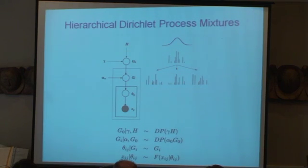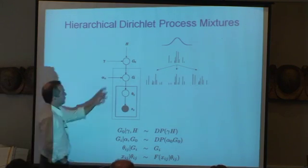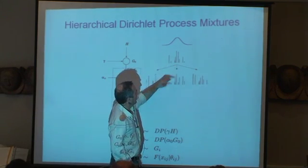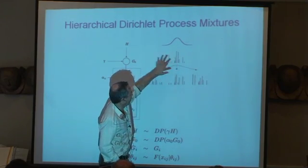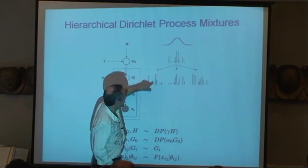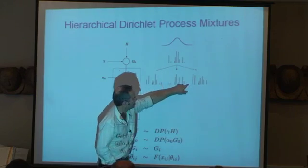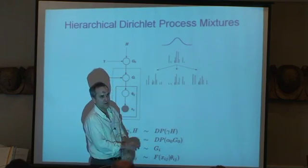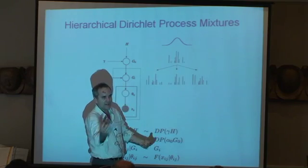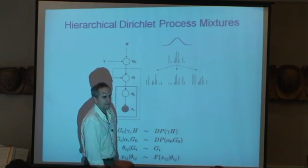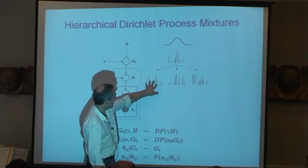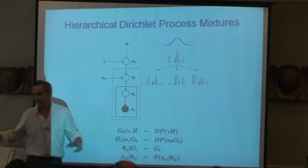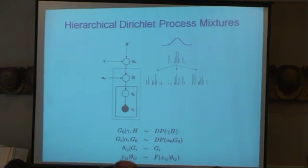We solve that with an architecture called the hierarchical Dirichlet process. The classical statistician solution is to go one more level up in the hierarchy. Instead of drawing the Dirichlet process once and freezing it, you draw it once and then use that as the base measure in each of these Dirichlet processes. So this becomes a tree of Dirichlet processes all connected up, and Bayesian inference passes atoms around in the tree. Now you start to get overlap between atoms across documents, just like in classical Bayesian hierarchies.